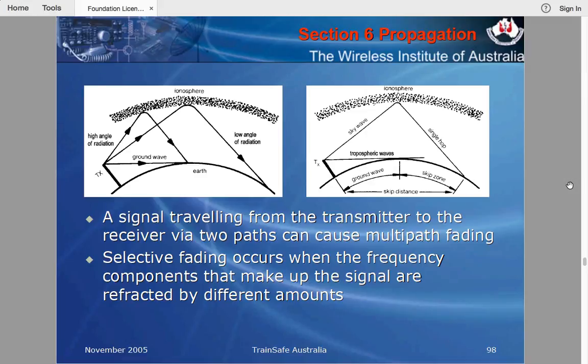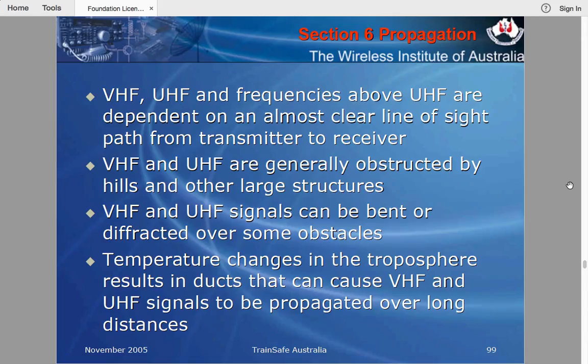A signal traveling from the transmitter to the receiver by two paths can cause multipath fading. Selective fading occurs when the frequency components making up the signal are refracted by different amounts, causing distortion. If you've ever listened to shortwave radio, that distortion of the signal is due to multipath fading.